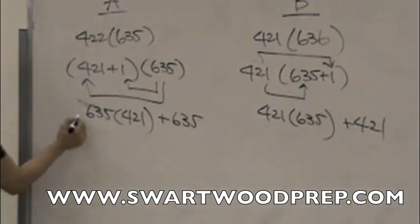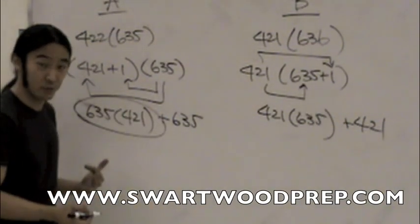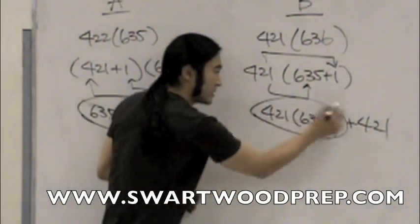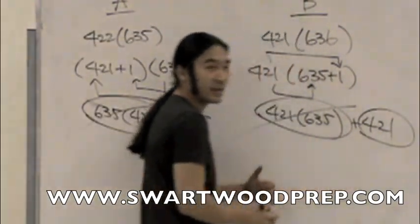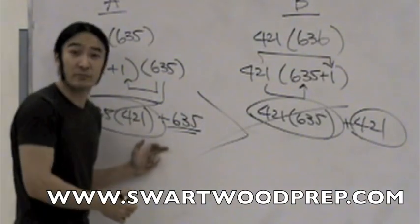Now it's a piece of cake, right? If I look on the guy on the left, this guy looks exactly like who? Like this guy on the right, kill them from both sides. Now it's an easy comparison, 635 versus 421. Hopefully we're comfortable with left side being bigger.